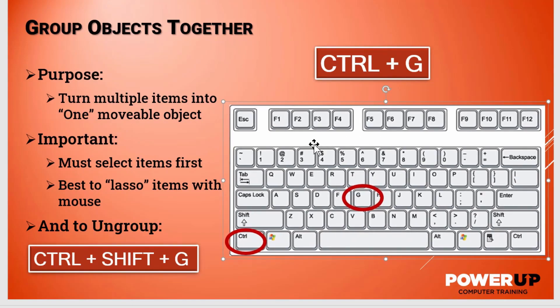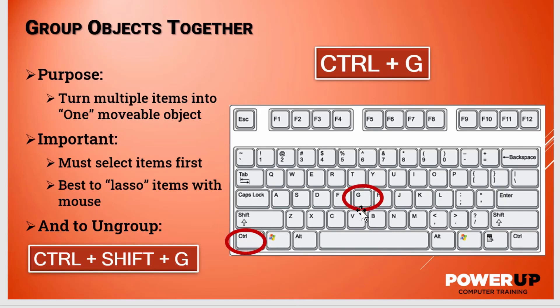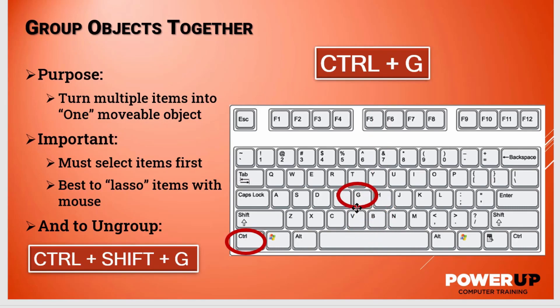Now to undo that or to ungroup, we're going to use the command Control+Shift+G. And now all three objects are independent again — we can click and move them as individual items.